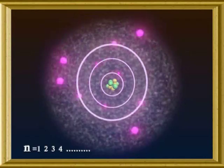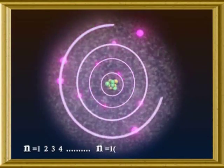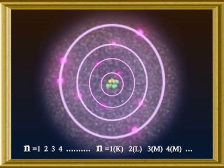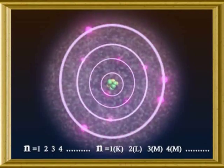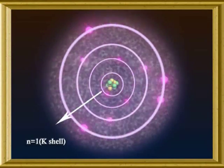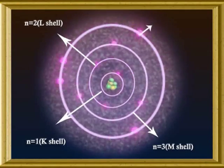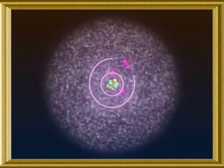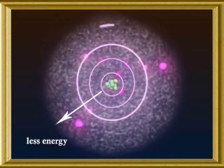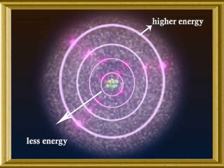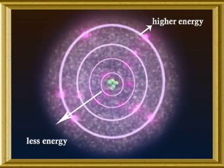The orbits are also designated by English alphabets as K, L, M, N shells and so on. So if n = 1, it represents the K shell; if n = 2, it represents the L shell, and so on. Each stationary orbit possesses a definite energy. The orbits closer to the nucleus have less energy, while the orbits away from the nucleus have higher energy — in other words, the outer orbits have higher energy than the inner orbits.